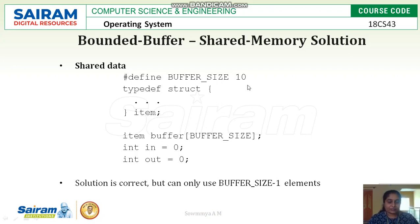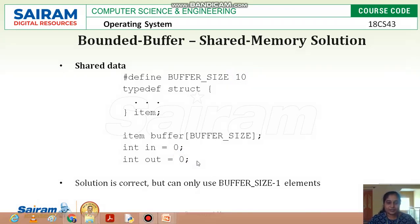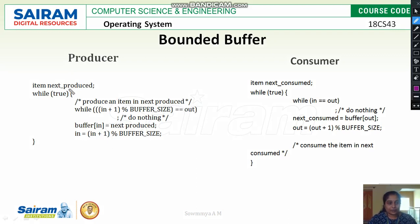For the bounded buffer shared memory solution, the buffer size is defined as 10. The structure of the buffer is defined as item, with item buffer of size 10, and variables 'in' and 'out' are initialized to 0. Once the buffer size and input/output variables are set, we see how producer and consumer are responsible for reading and writing data. The producer checks while true, produces an item in 'next produced', and the 'in' value is incremented modulo buffer size.